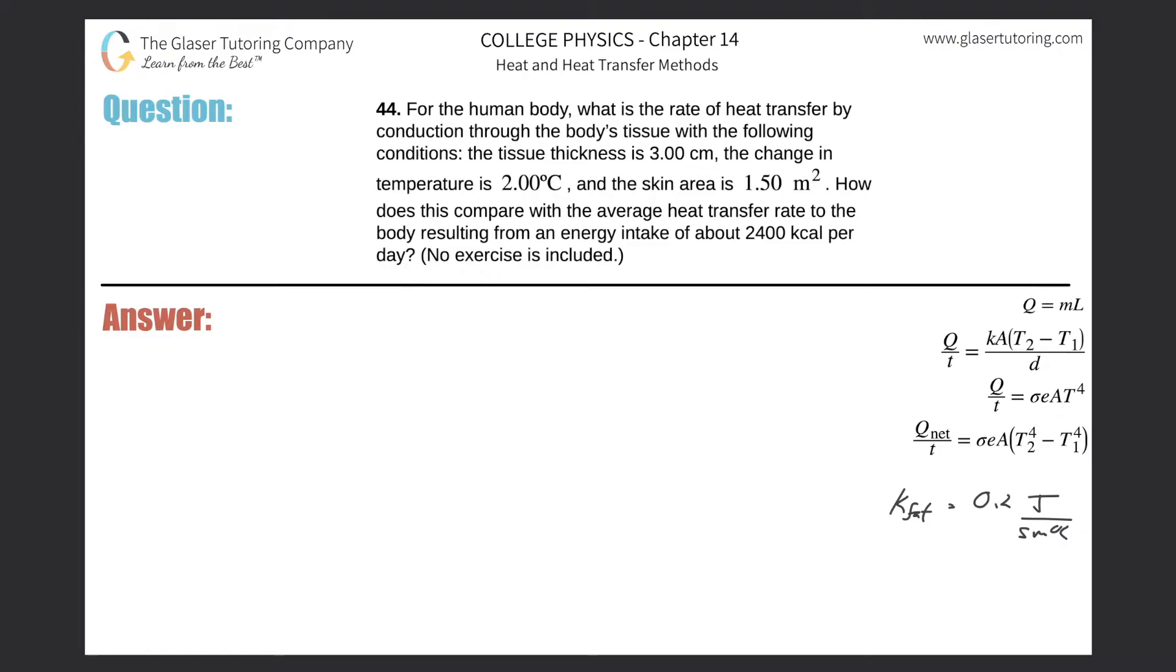Number 44. For the human body, what is the rate of heat transfer by conduction through the body's tissue with the following conditions: the tissue thickness is three centimeters, the change in temperature is two degrees Celsius, and the skin area is 1.5 meters squared.